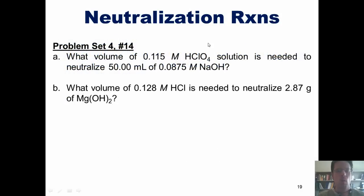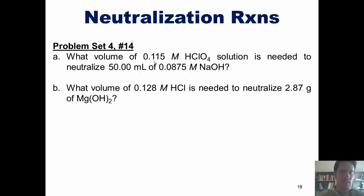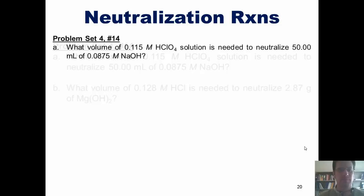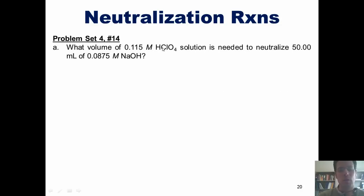Here are some problems. What volume of 0.115 molar perchloric acid solution is needed to neutralize 50 milliliters of 0.0875 molar sodium hydroxide? And second, what volume of 0.128 molar HCl is needed to neutralize 2.87 grams of magnesium hydroxide? I should warn you that while I am going to do part A, I will not do part B, but will let you attempt it on your own.